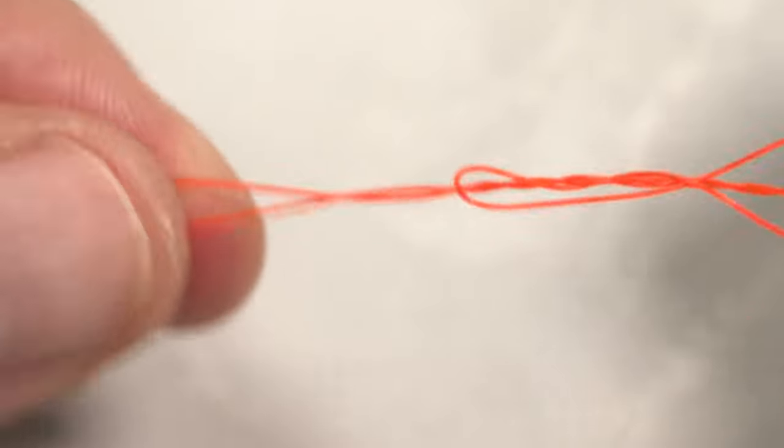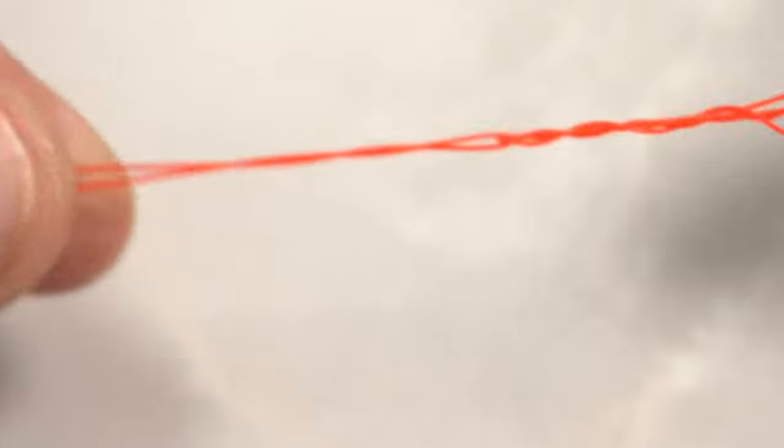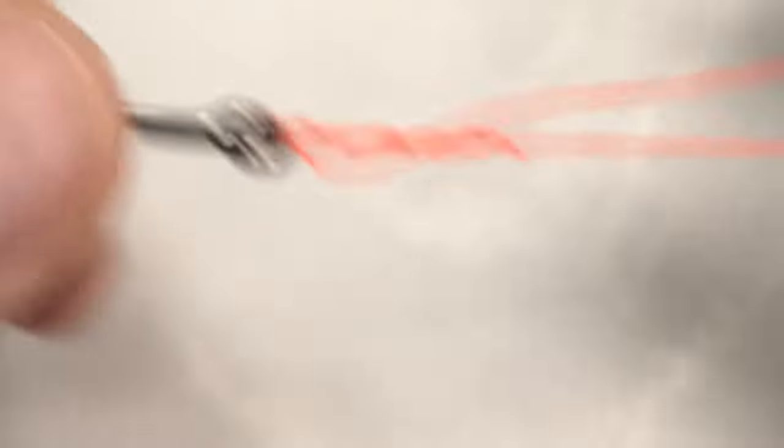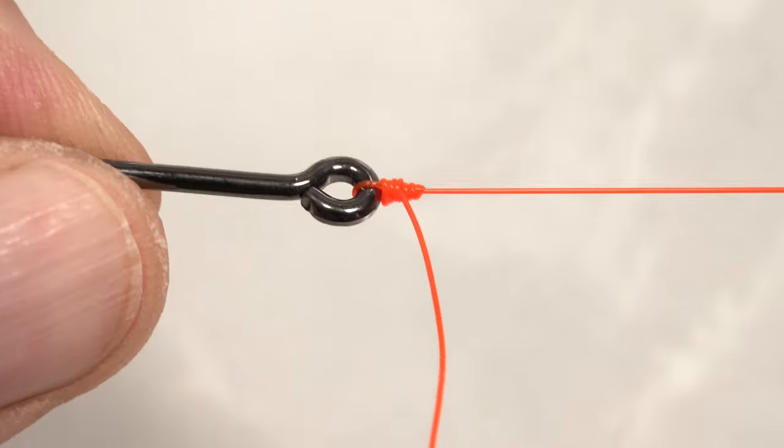Then, lubricate and seat the knot. In theory, the improved clinch knot is stronger than a regular clinch knot, but many anglers find the extra tying effort not really worth it in the end.